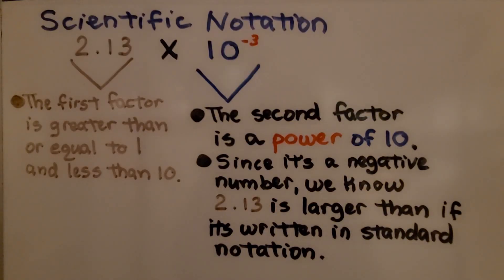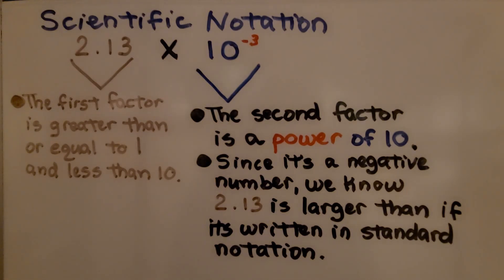In scientific notation, the first factor is greater than or equal to 1 and less than 10, and the second factor is a power of 10. Since it's a negative exponent, we know 2 and 13 hundredths is larger than the number when it's written in standard notation.